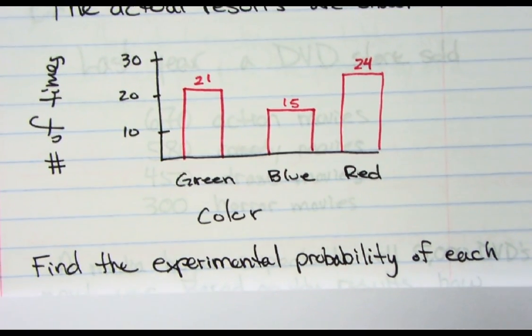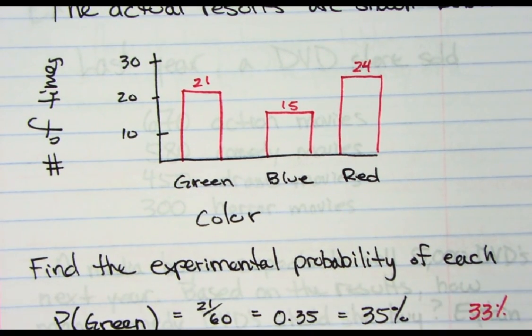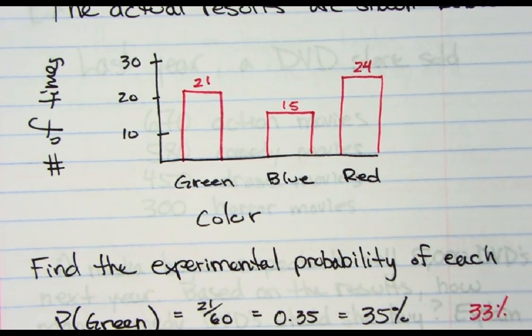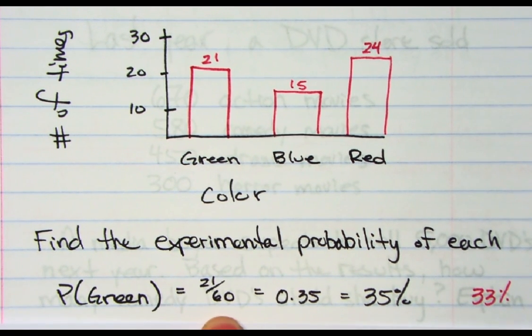Find the experimental probability of each. Let's talk about the green one. Probability of green was 21 out of 60, which was 35%.